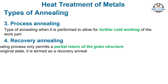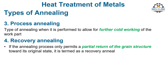If the annealing process only permits partial return of the grain structure toward its original state, it is termed a recovery anneal. When performed on the completed cold-worked part to remove the effects of strain hardening and where no subsequent deformation will be accomplished, it is simply called an anneal. The process itself is pretty much the same, but different terms are used to indicate the purpose of the treatment. If annealing conditions permit full recovery of the cold-worked metal to its original grain structure, then recrystallization has occurred.